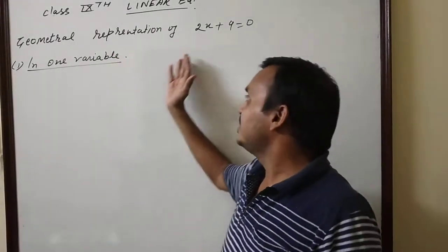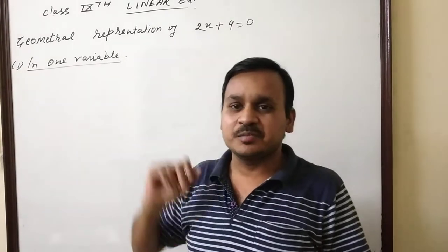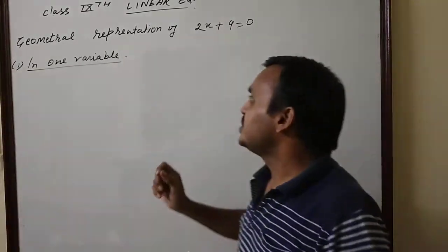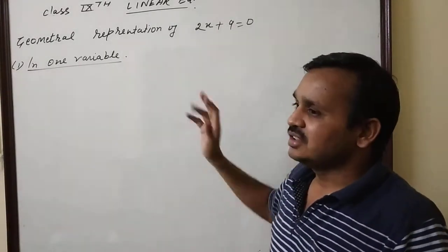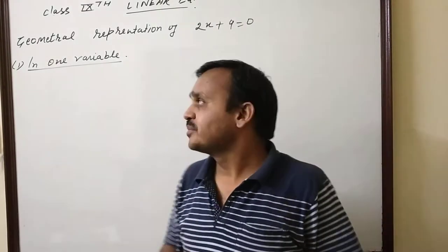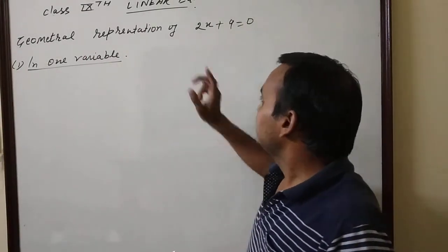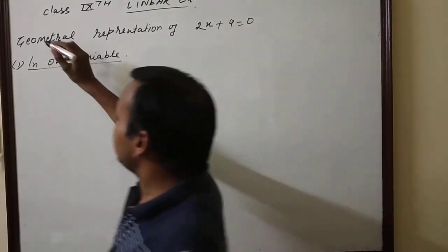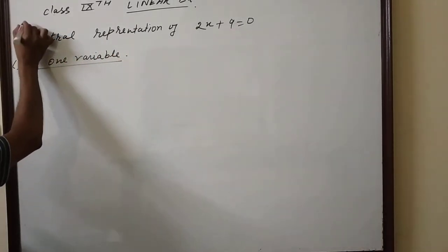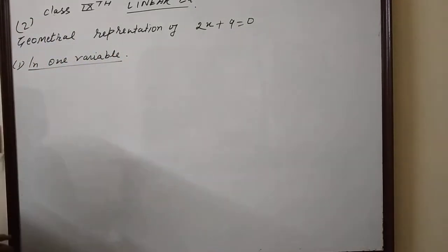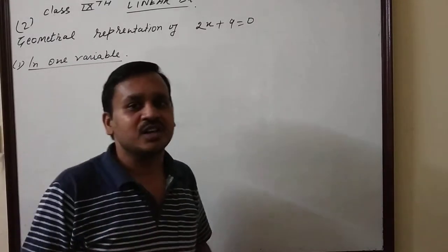This is a linear equation question from exercise 4.4. The question asks for the geometrical representation of 2x+9=0 - whether to find the area of two parts in one variable or two variables.